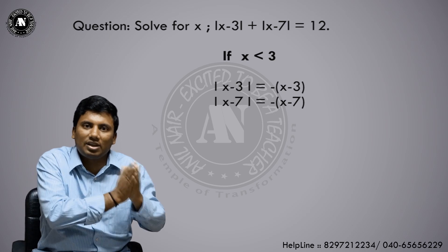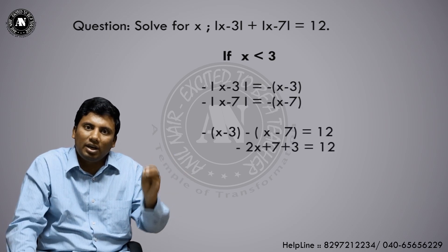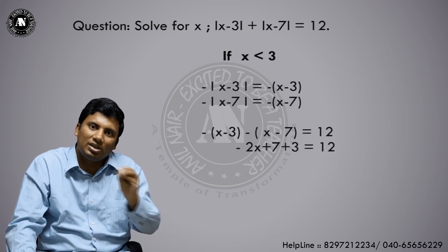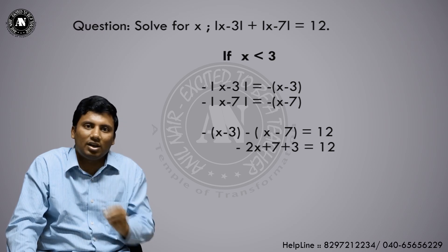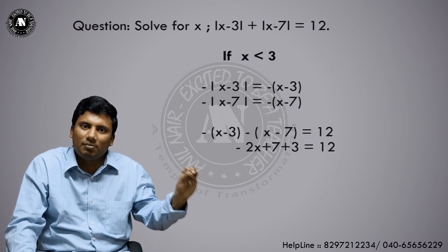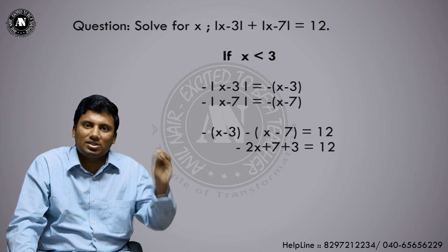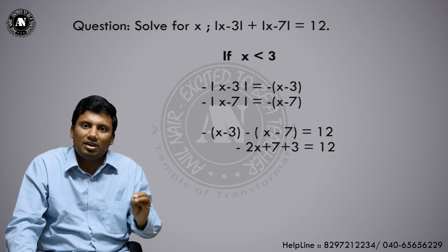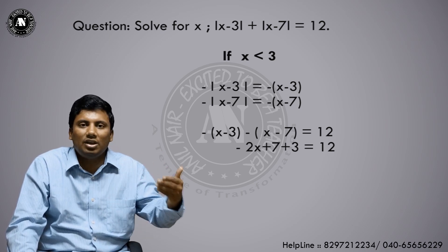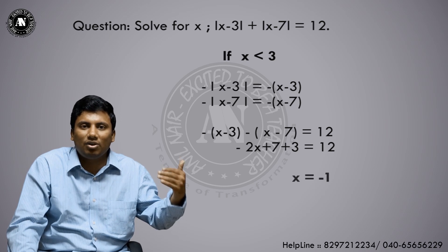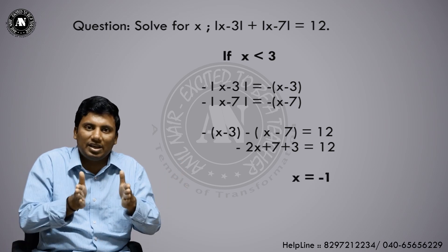So the equation for Case 1 becomes: -(x - 3) + -(x - 7) = 12, giving -2x + 10 = 12. From there you will get the value of x.